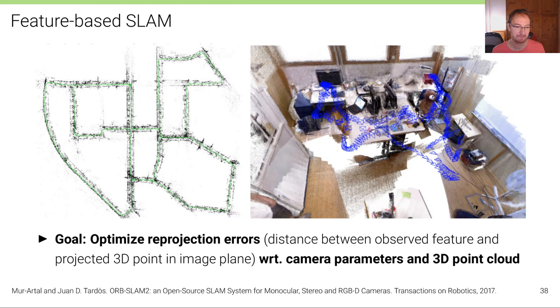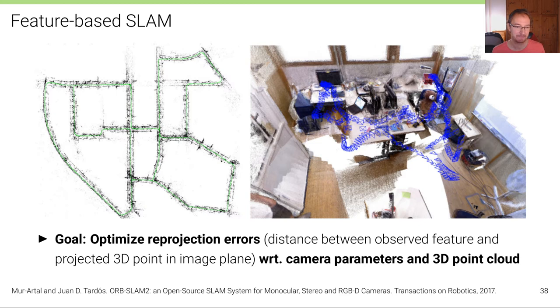So let's look at feature-based SLAM. The goal is to optimize reprojection errors. That is the distance between the observed features in the image and the projected 3D points into the image plane with respect to the camera parameters and the 3D point cloud. And you can see an example of such a 3D point cloud and camera poses here for an indoor scene on the right. And on the left, this is a self-driving situation from the KITTI dataset, where you can see the recovered trajectory in green and the 3D landmarks, the 3D features in black, which form the map.